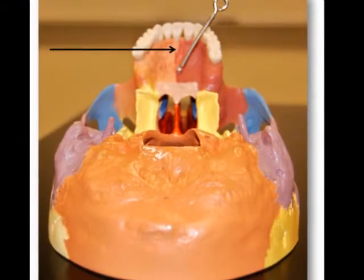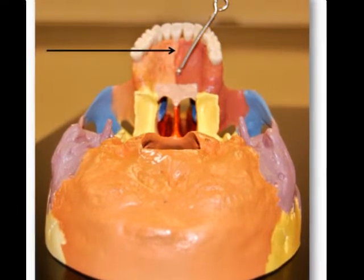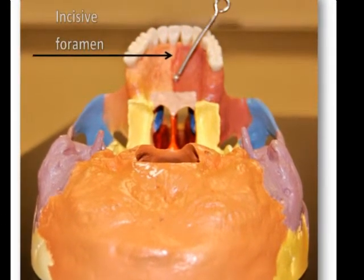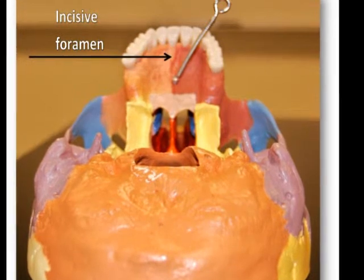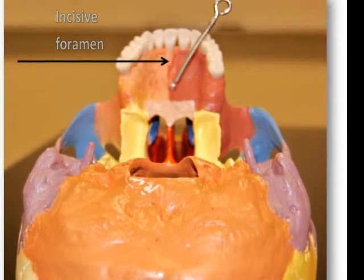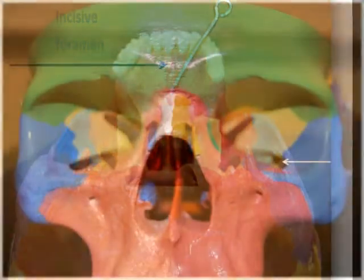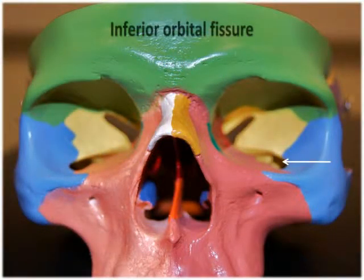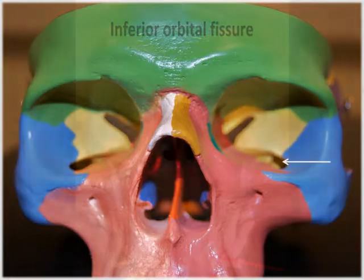Another foramen located just posterior to the incisor teeth is the incisive foramen, which allows passage of the greater palatine blood vessels as well as the nasopalatine nerve. Another opening associated with the maxillae is the inferior orbital fissure, which is located between the maxillae and the greater wing of the sphenoid bone.